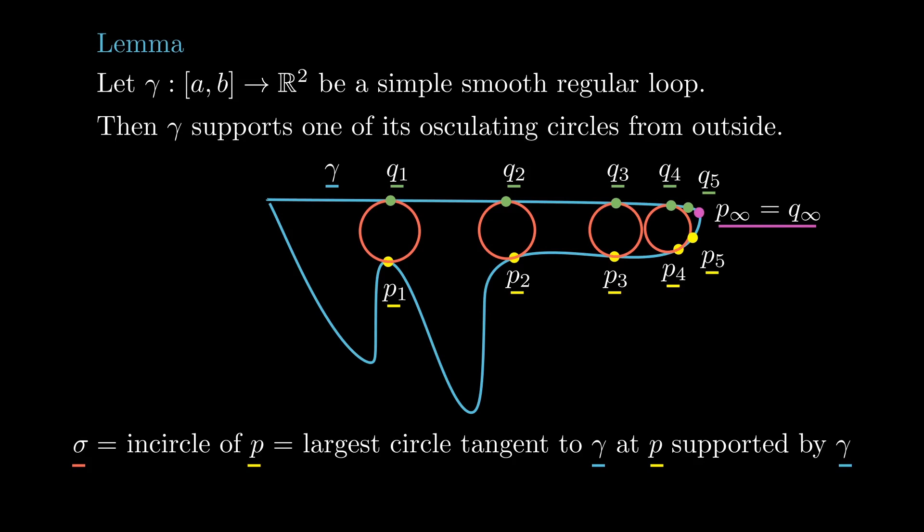This implies that the intersection of all these arcs consists of a single point, p infinity, whose in-circle sigma infinity touches the curve gamma again at a point q infinity.